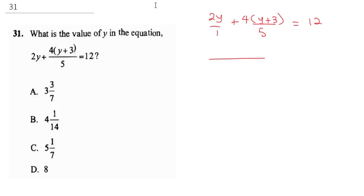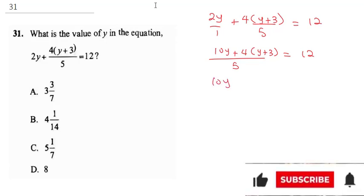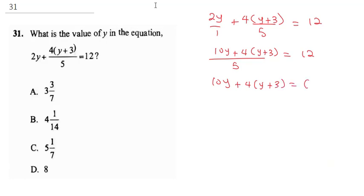The LCM is 5. So 5 into 1 is 5, and 5 times 2y gives us 10y, plus 4y plus 3, equals 12. From here we can cross multiply: 10y plus 4 times (y plus 3) equals 60.